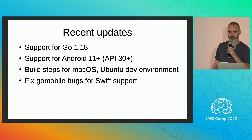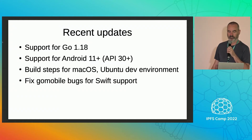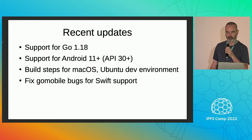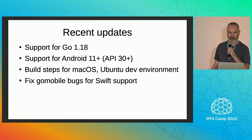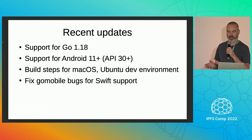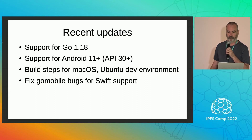Recent updates include support for Go 1.18. We added support for Android 11, which is API 30 — it has to do with the tighter security on newer versions of Android. We also improved the instructions so that whether your dev environment is on a Mac or Ubuntu, it should be much more clear how to build it.